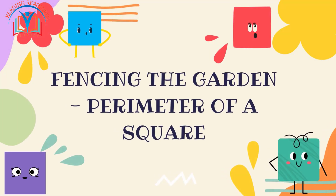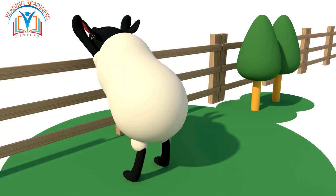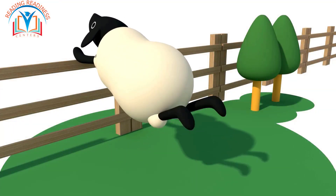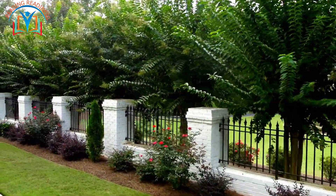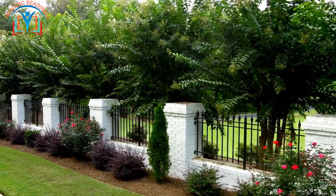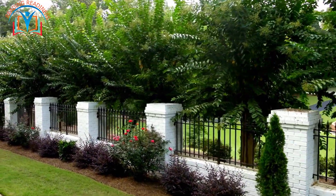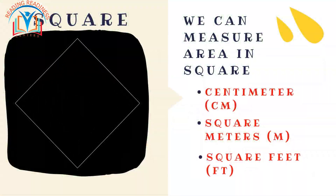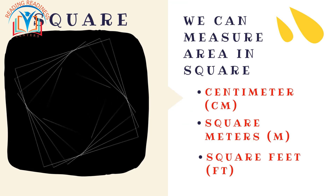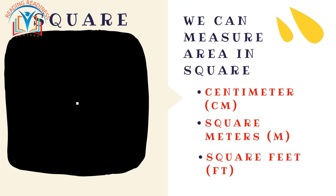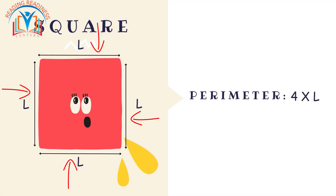Now let's imagine you want to fence your garden to keep the animals away. To determine the amount of fencing you need, you calculate the perimeter of your garden. To measure perimeter, we use linear units such as centimeters (cm), meters (m), or feet (ft). Since a square has four equal sides, we calculate its perimeter by multiplying the length of one side by four.